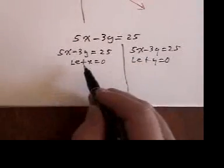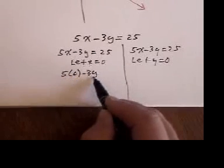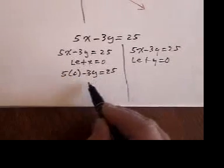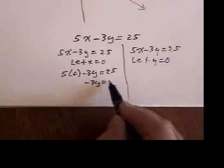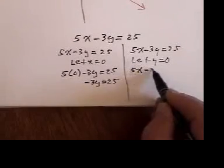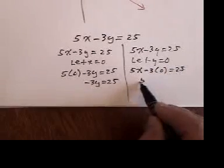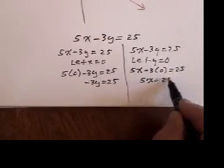Like that. And this will be 5 times 0 minus 3Y is 25 or minus 3Y equals 25. Over here I'll have 5X minus 3 times 0 is 25 or 5X equals 25.